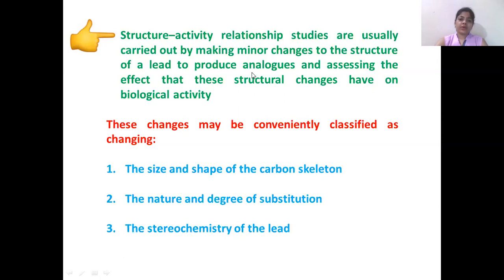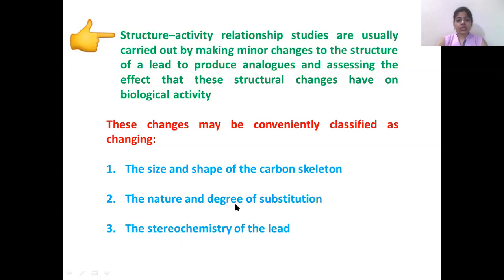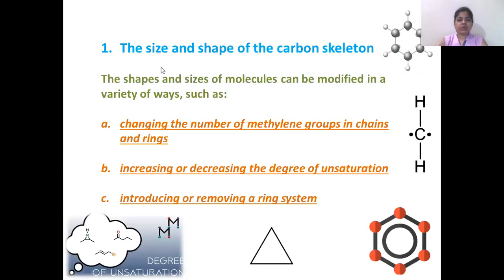How can changes be made in the lead structure to produce analogues? This can be done in three ways: first, by changing the size and shape of the carbon skeleton; second, by changing the nature and degree of substitution; and third, by changing the scale of the lead. In today's session, we will discuss in detail the changes that can be made in the size and shape of the carbon skeleton, and the effect on biological activity. This can be done in three ways: changing the number of methylene groups in chains and rings; increasing or decreasing the degree of unsaturation; and introducing or removing a ring system.